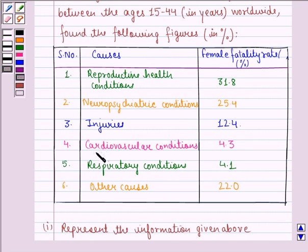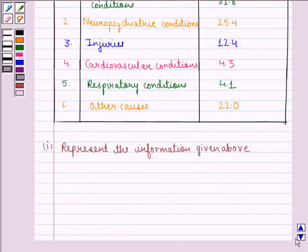Injuries 12.4%, cardiovascular conditions 4.3%, respiratory conditions 4.1%, and other causes 22.0%.